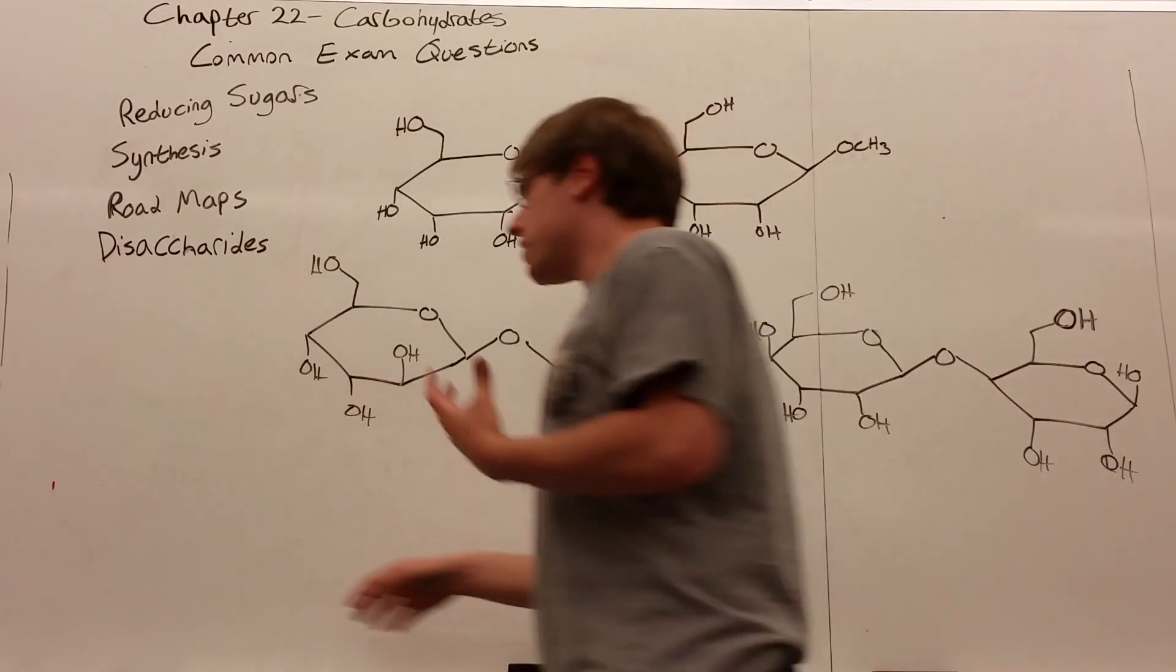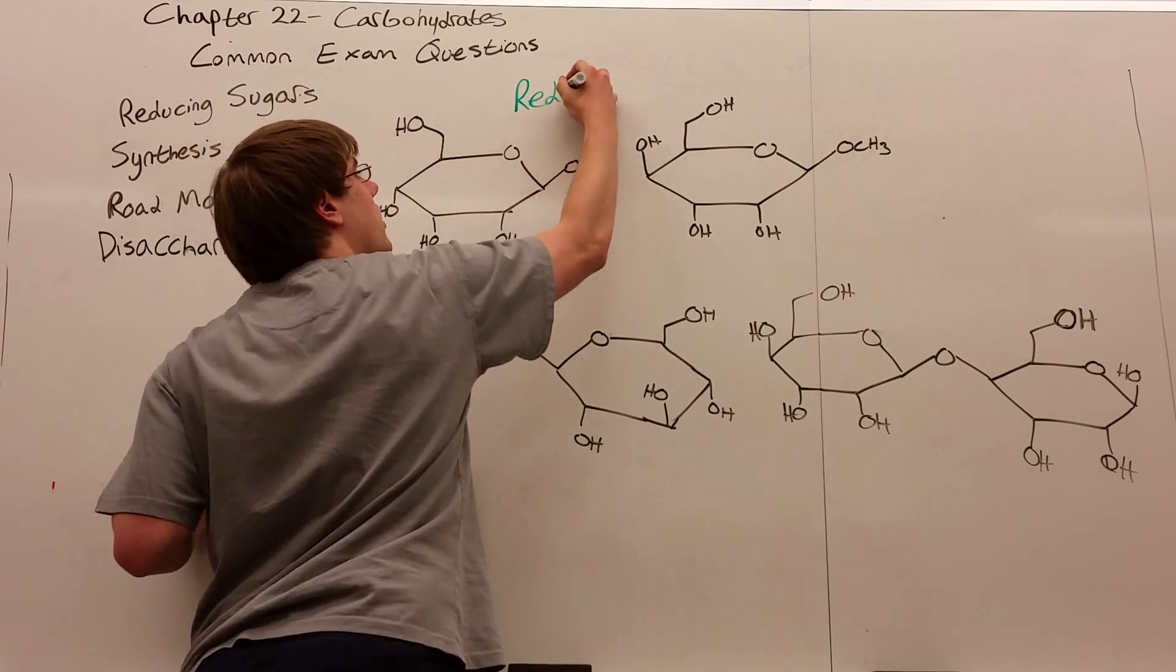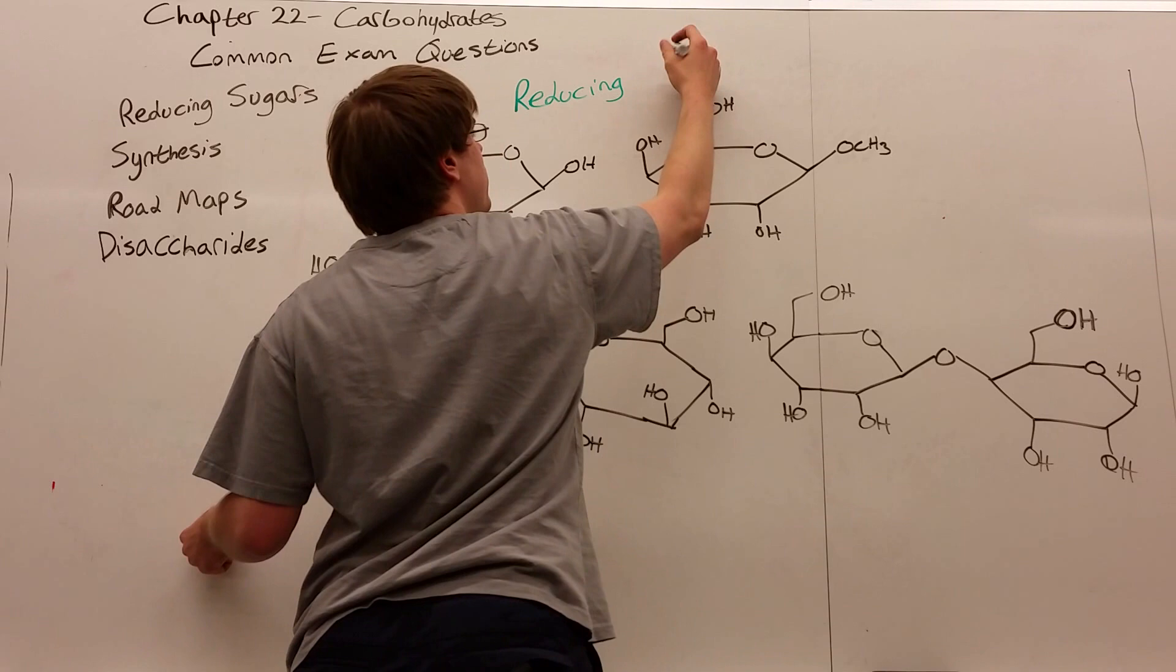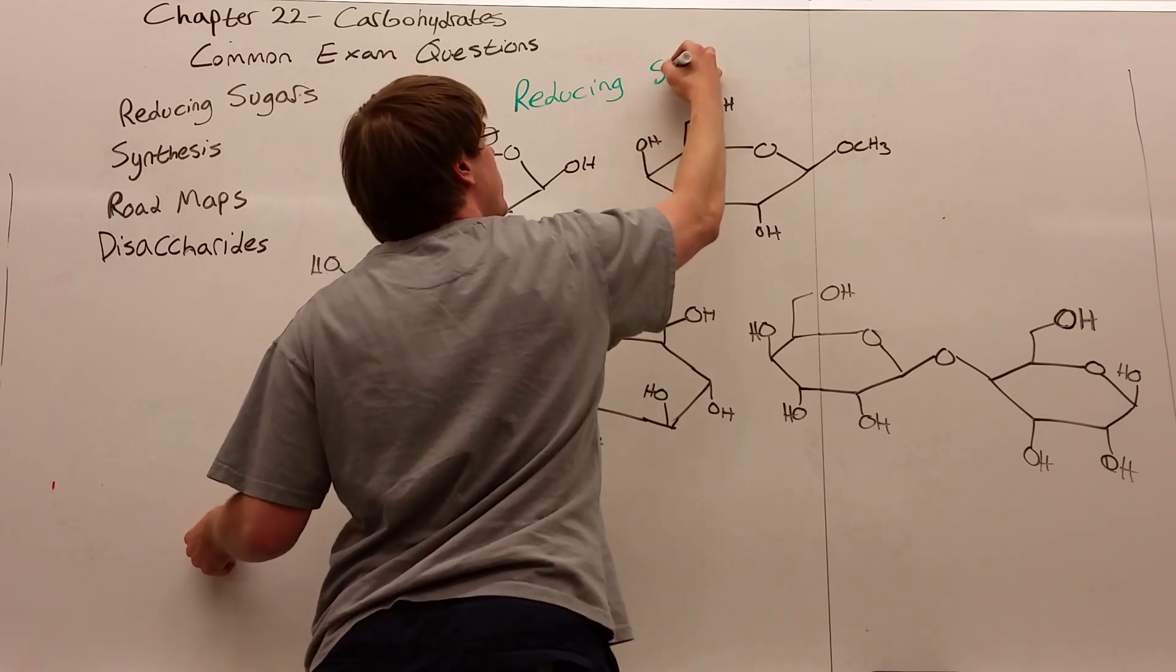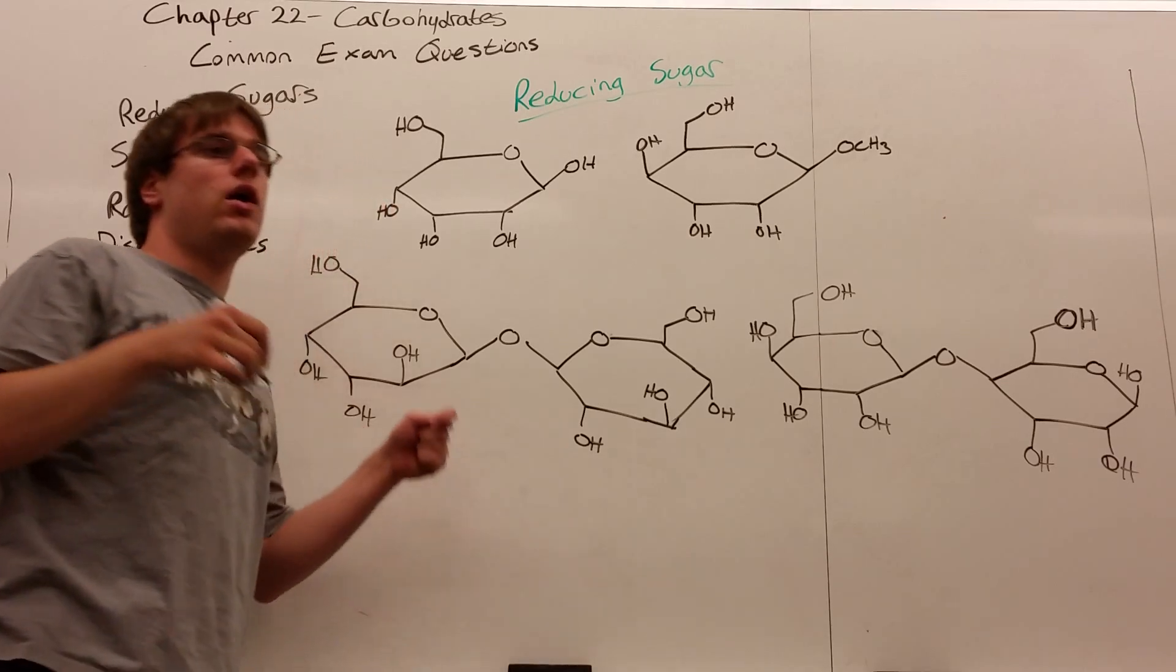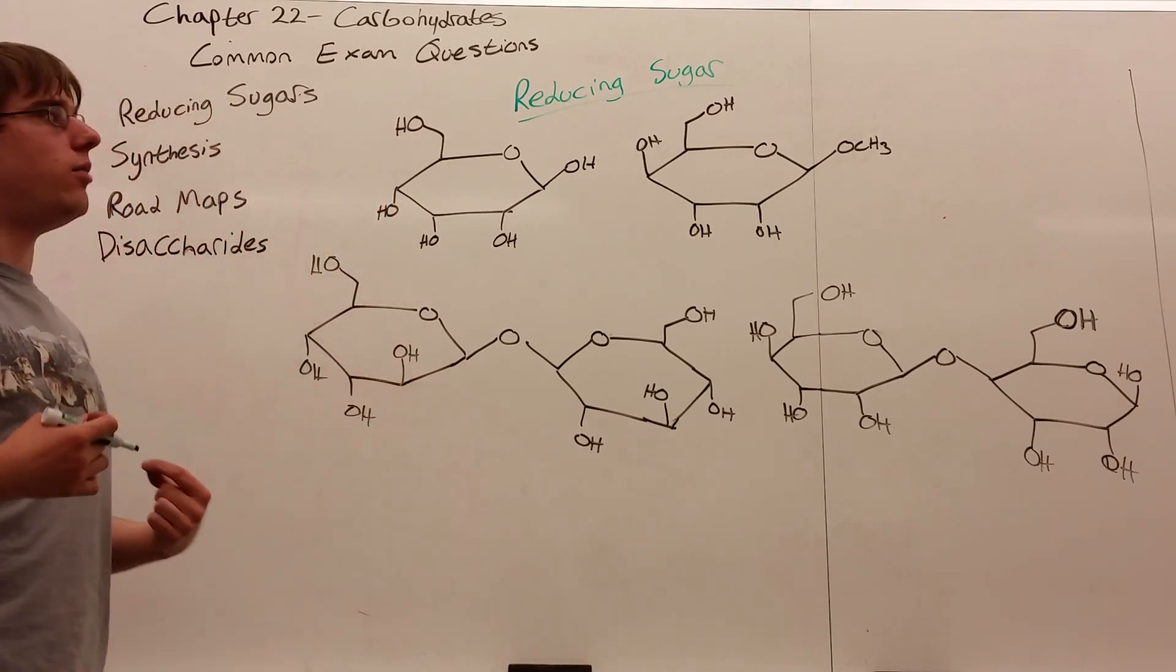So starting off, we need to discuss a concept of something called reducing sugars, and of all the common questions I see on exam, this is probably the simplest because all a reducing sugar is, is a sugar that reacts with NABH4. In other words, a sugar that has its anomeric OH available.